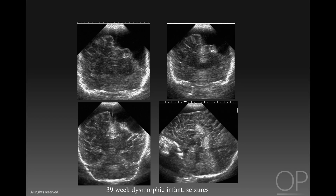Another type of focal echogenic lesion is commonly seen in patients who have other anomalies of the brain. Here we see a 39-week infant who is dysmorphic and has seizures. On the sagittal midline image, there is only a partially formed corpus callosum and brightly echogenic lesions in the midline posterior to the genu of the corpus callosum. In this situation, these brightly echogenic lesions represent callosal lipomas.